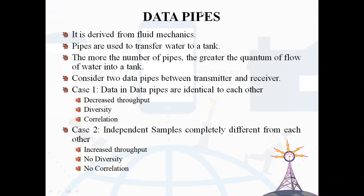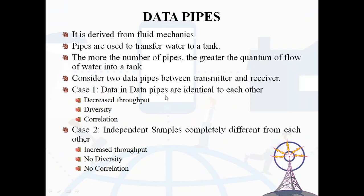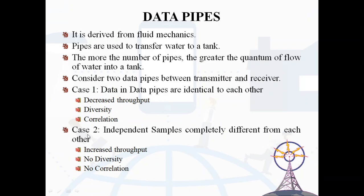Data pipes is a concept derived from fluid mechanics, where pipes are used to transfer water to a tank — the more the number of pipes, the greater the flow of water. Considering two data pipes between transmitter and receiver: in Case 1, data in the pipes are identical to each other, resulting in decreased throughput, diversity, and correlation. In Case 2, data are independent and completely different from each other, resulting in increased throughput with no diversity and no correlation.